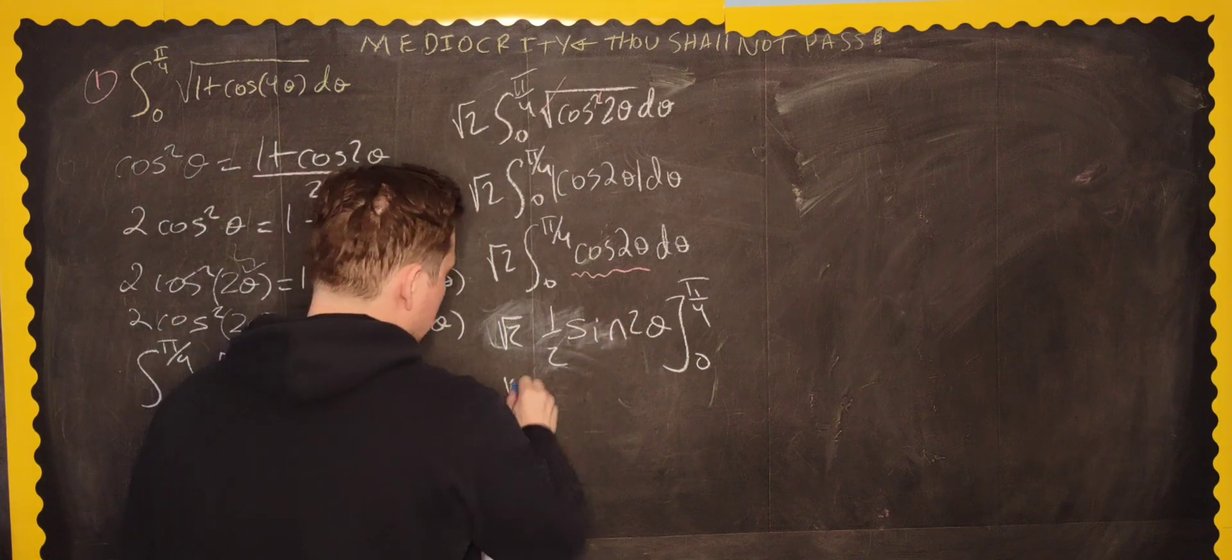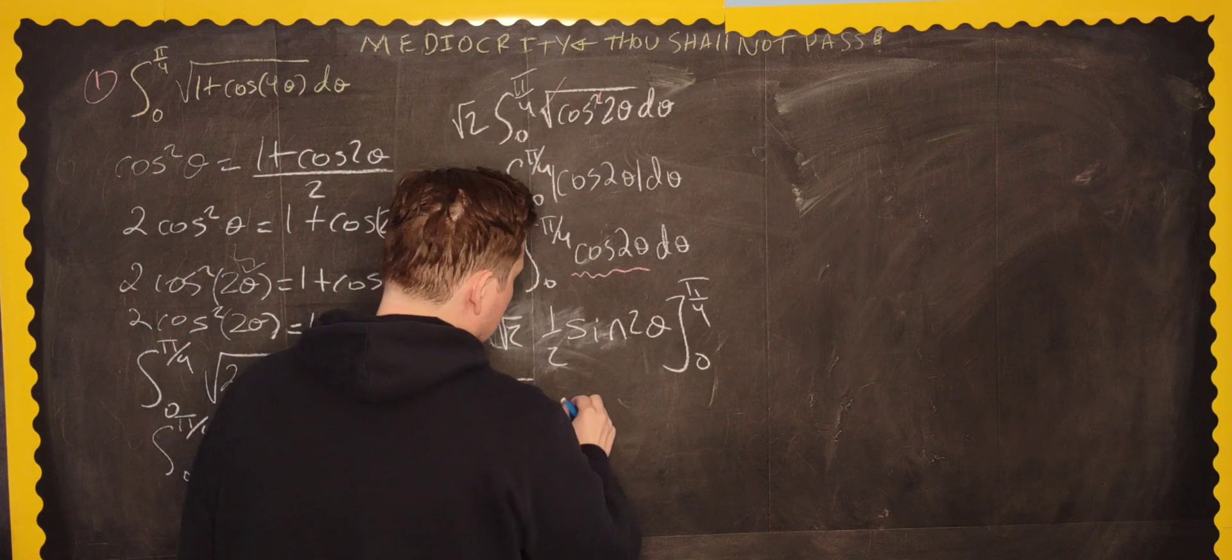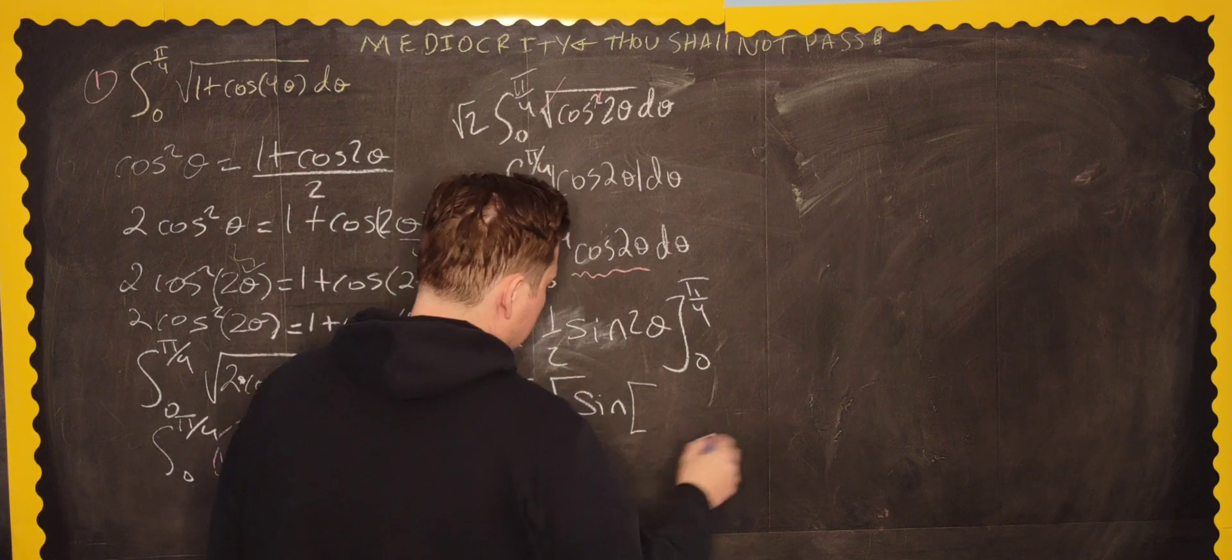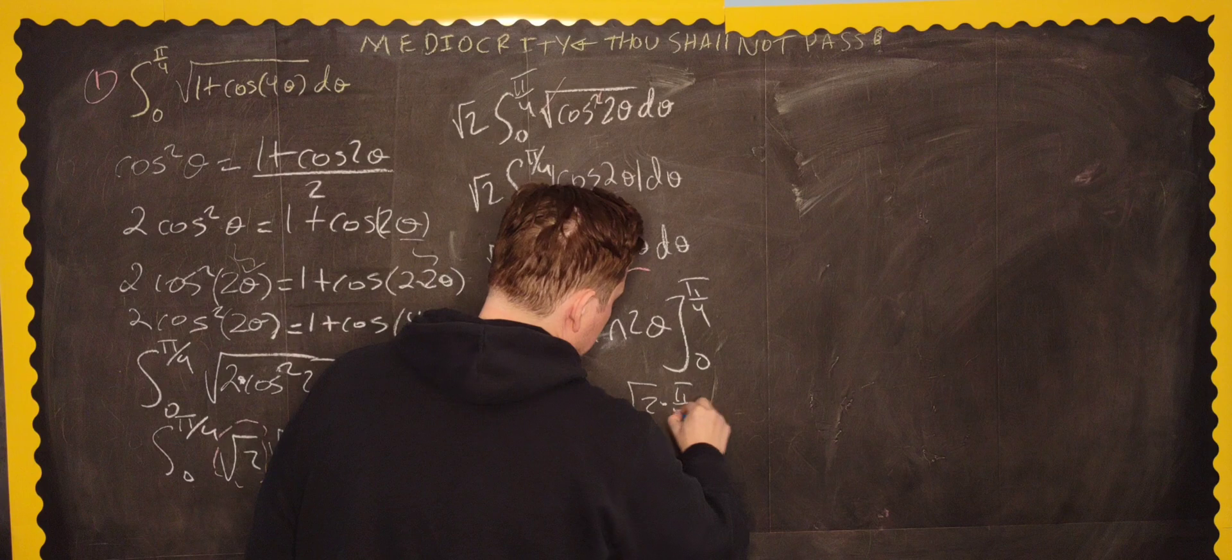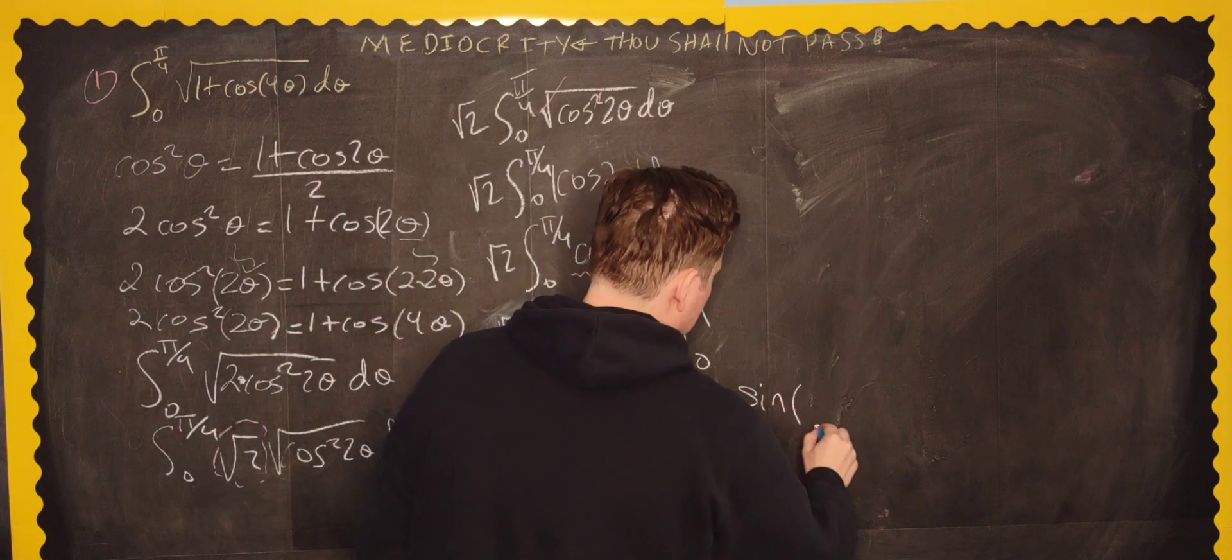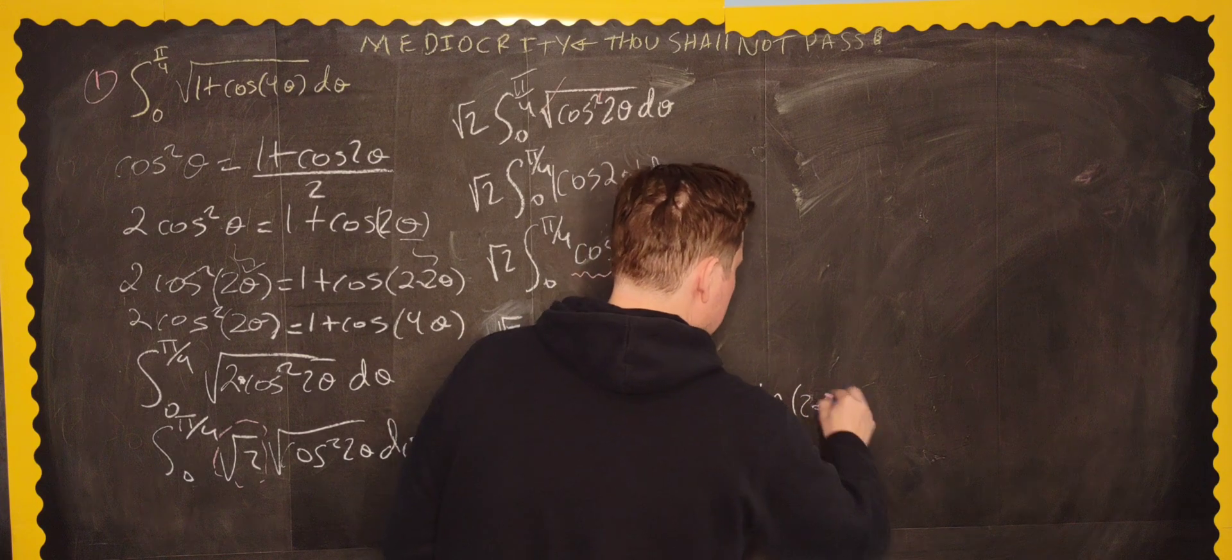Okay, then you go through this. So it's going to be the root of 2 over 2. And then you're going to replace, so sine of, bracket in here. And then 2 times pi over 4. Okay? And then minus sine of 2 times 0 this way.